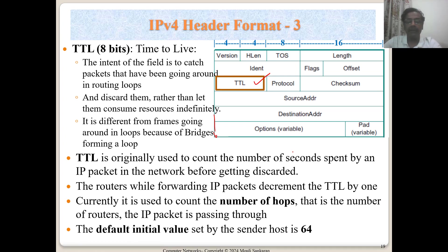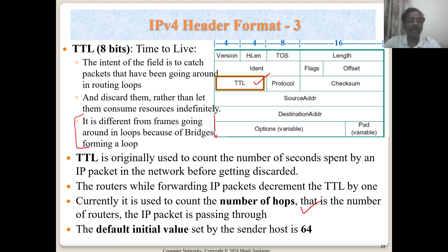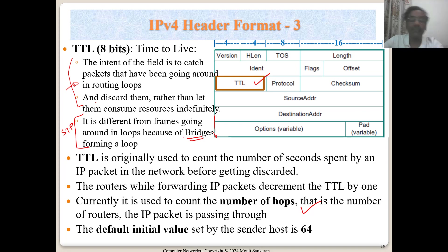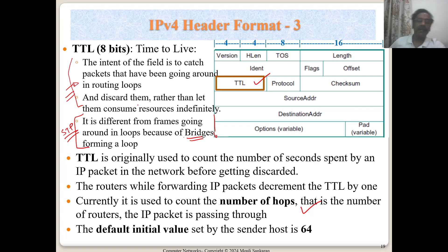The TTL field was originally intended to count seconds, but now counts router hops; the default initial value is 64. In Ethernet LANs, STP (Spanning Tree Protocol) prevents frame loops. But IP packets traverse different networks where no global loop-prevention protocol like STP exists. Misbehaving routers or unresolved IP addresses can cause loops, so the TTL field prevents packets from hogging the internet indefinitely.